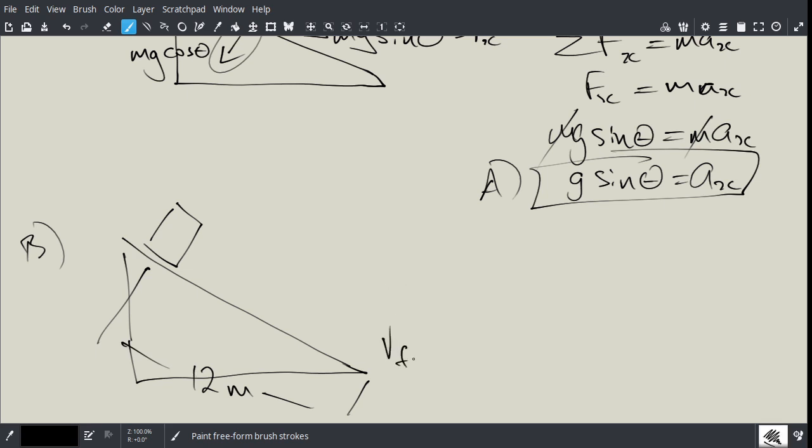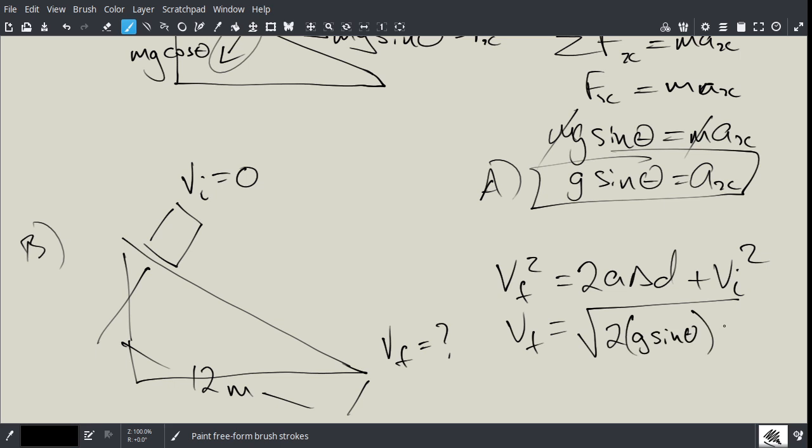and we're asking for the final velocity at the bottom where the initial velocity is zero. So this is a really simple problem now because we've done all the hard work. What we're going to do here is we're going to say V final squared equals 2A delta D plus VI squared, and so we've got everything that we need here to calculate V final. So we're just going to go V final is equal to the square root of two times, now the acceleration we know is g sine theta, and delta D is 12 and VI is just zero so I can leave it off.